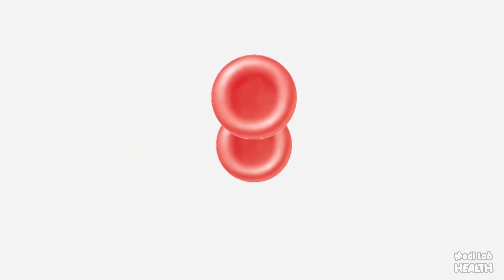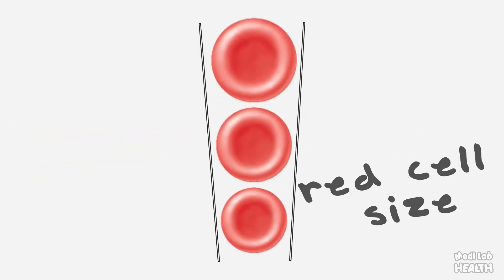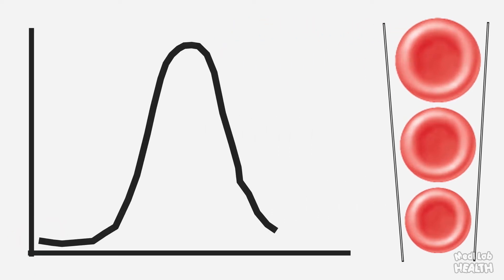Now you know red cell distribution width provides some insight and quantification into the variation in red cell size. This RDW value is derived from the red blood cell histogram and is represented either as coefficient of variation or standard deviation of the red cell histogram distribution curve.